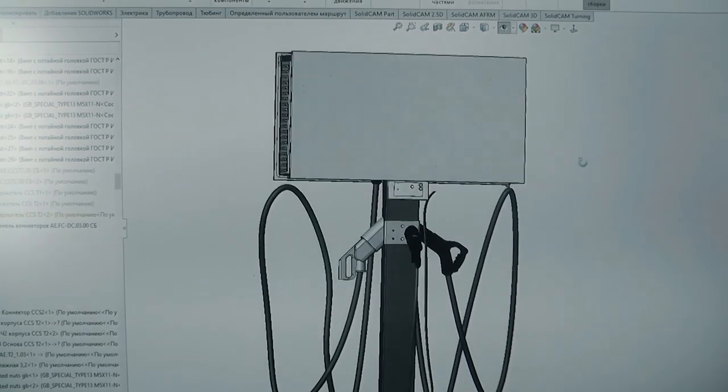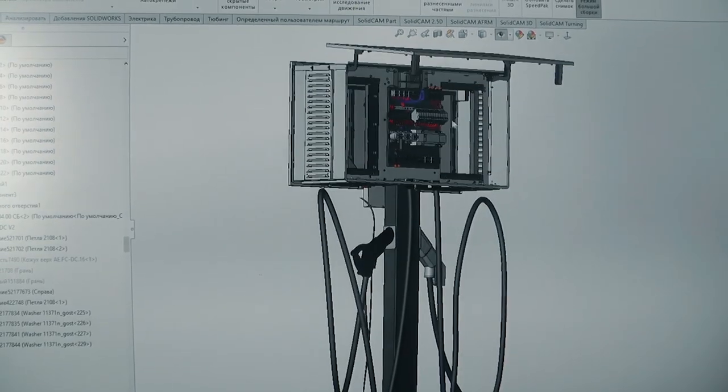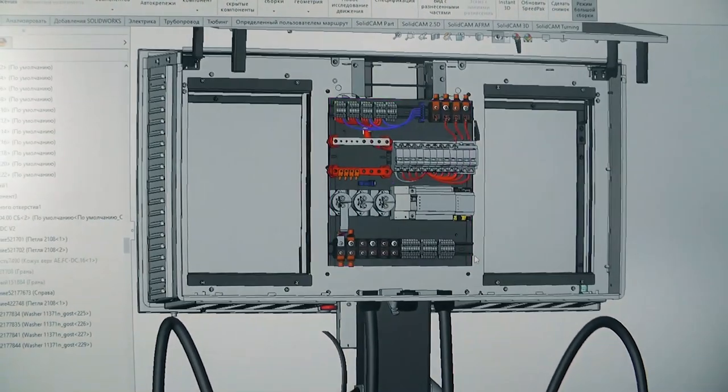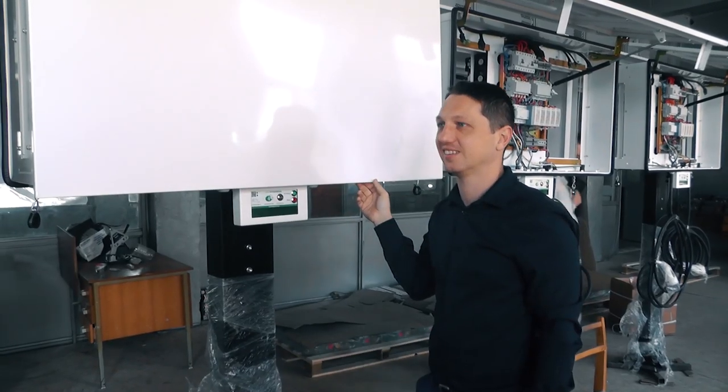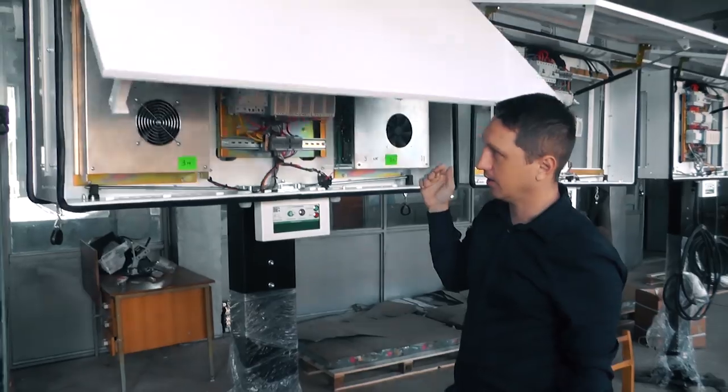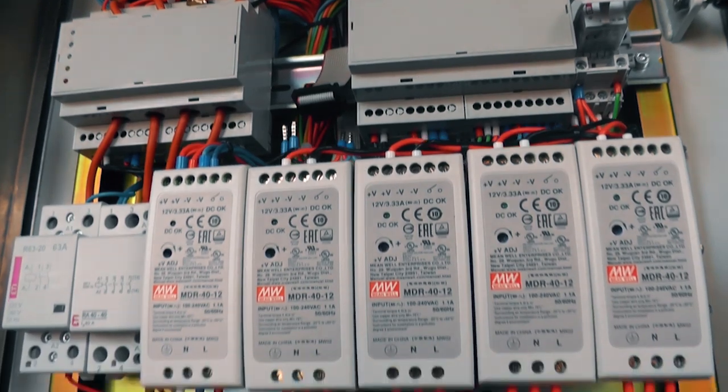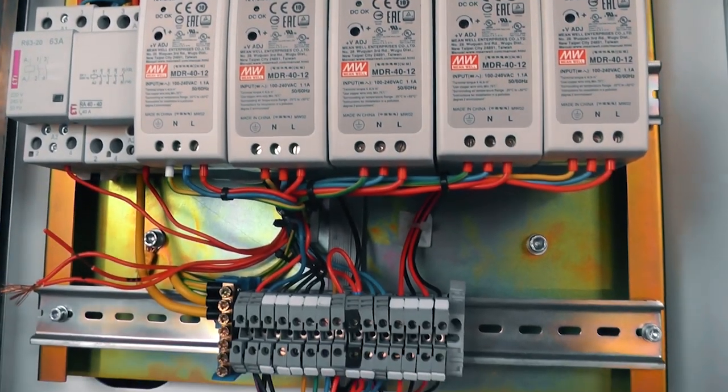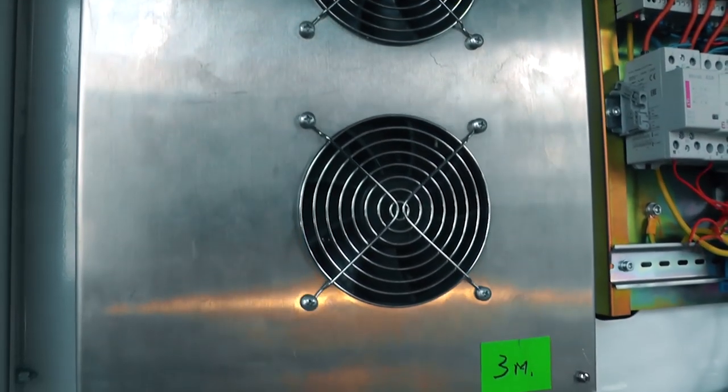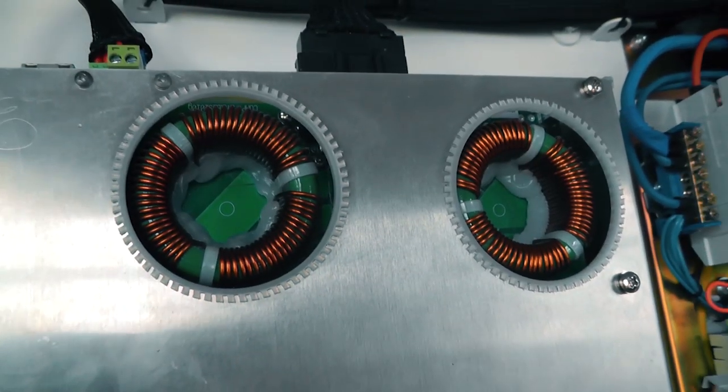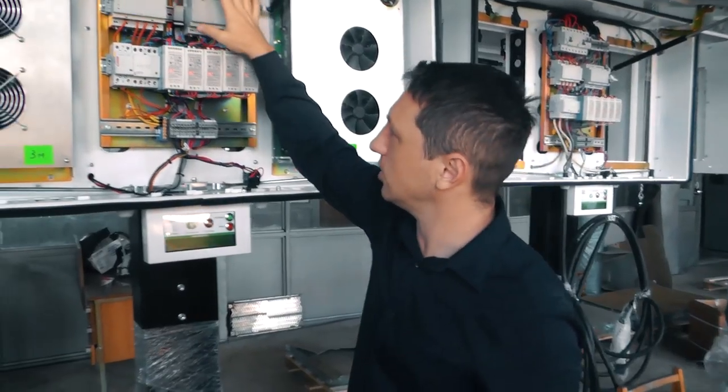This universal charging station was developed by the Auto Enterprise scientific and engineering teams for a year and a half. Electronic staffing is located in a strong steel vandal-proof case. Constructors have carefully considered not only the electrical scheme of the station, but also the optimal location of the units inside. The four controllers are Dutch-made, and they are just like in the Elon Musk's superchargers. The most unique part is this one.